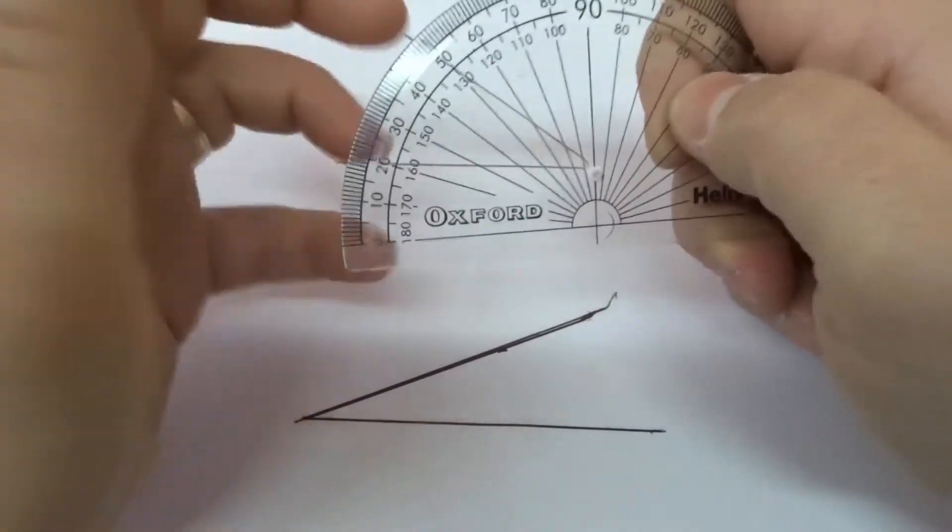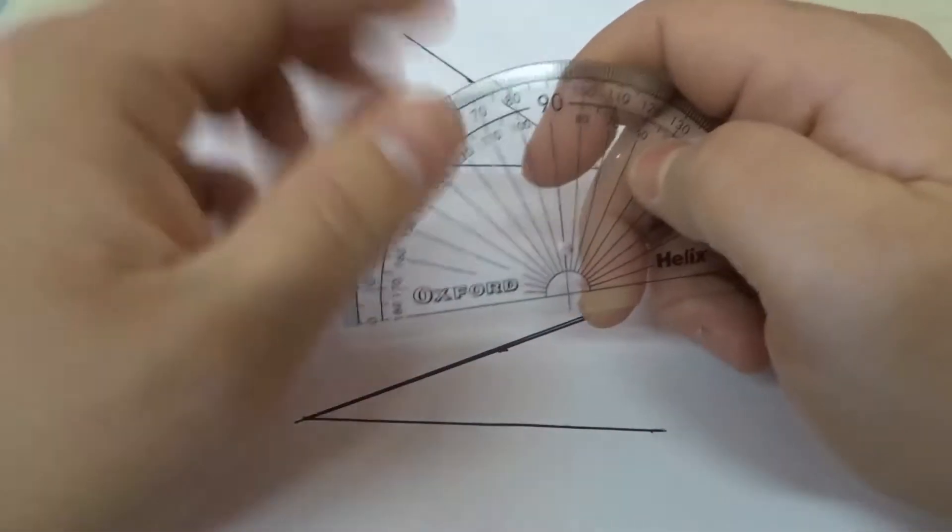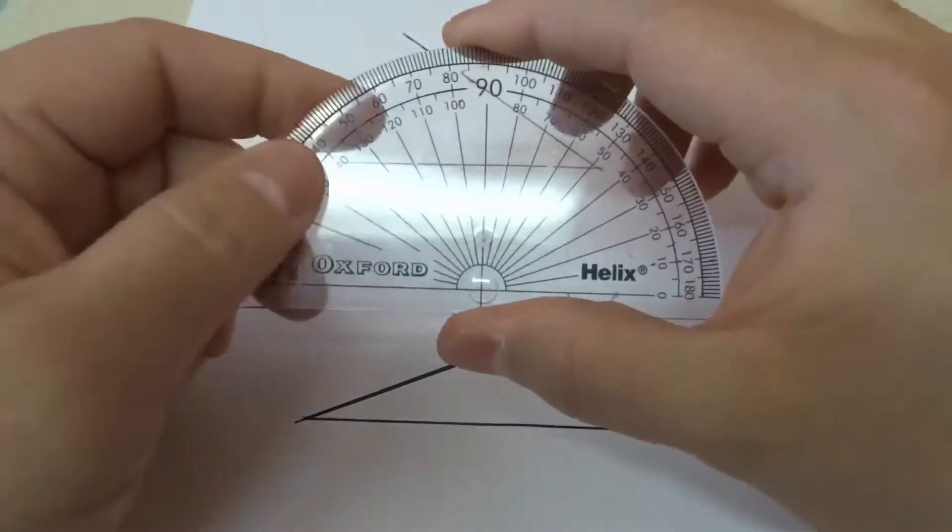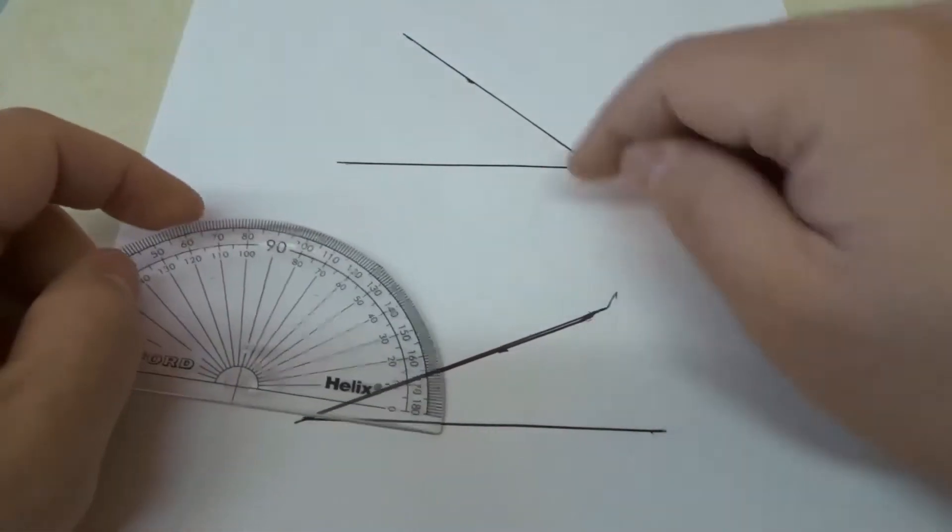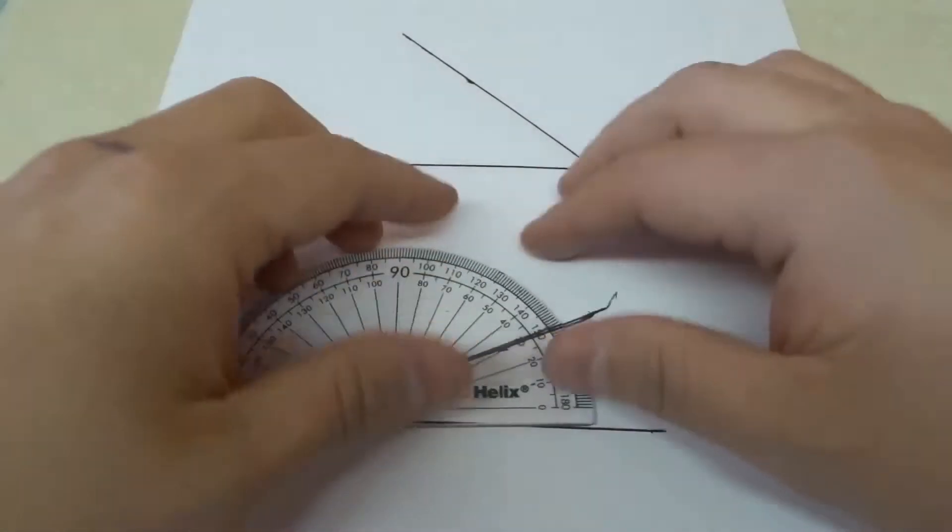But they come in different shapes, sizes, well not really different shapes, they're all this shape, but different sizes, colors and stuff like that, different fonts. But this is just a typical protractor and I've drawn two angles on here and I'm going to show you how to measure the angles. It's actually really easy to do.